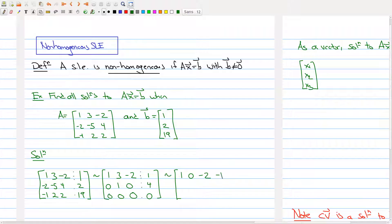If I do that, I end up with 1, 0, -2, -11, 0, 1, 0, 4, and in the bottom row I have all zeros. This is reduced row echelon form of the augmented matrix.